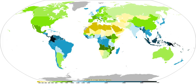A significant portion of the annual precipitation in any particular place falls on only a few days — typically about 50% during the 12 days with the most precipitation.